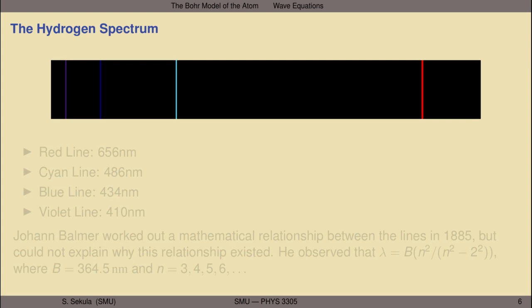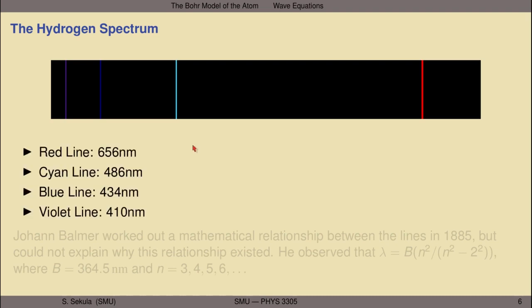Let's be more numerical about the hydrogen emission spectrum. We have a red line, a blue-green or cyan line, a dark blue line, and a violet line. These have associated wavelengths for the photons that carry each of these colors of light to our eye. The red line has a wavelength of 656 nanometers. The cyan or blue-green line has a wavelength of 486 nanometers. The dark blue line has a wavelength of 434 nanometers, and the violet line has a wavelength of 410 nanometers. Go ahead and pause the video, write these four numbers down noting the colors that go with each of them, and let's save that information for a little bit later.